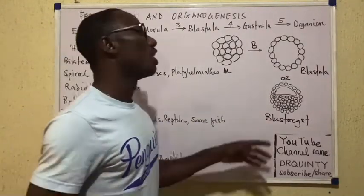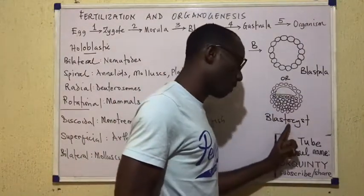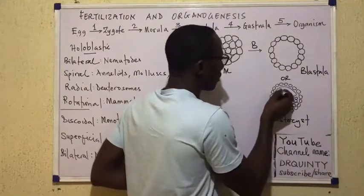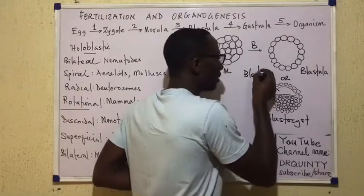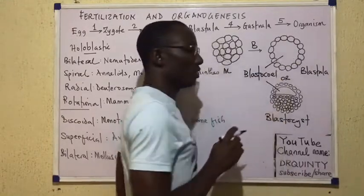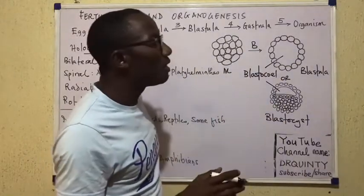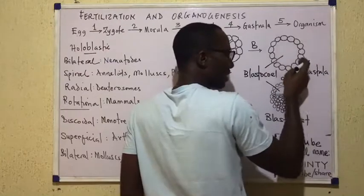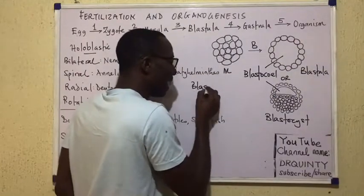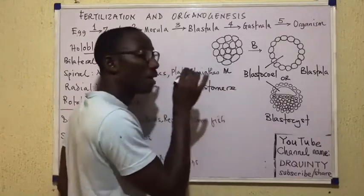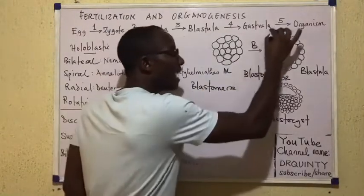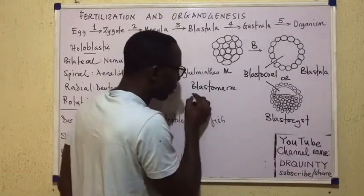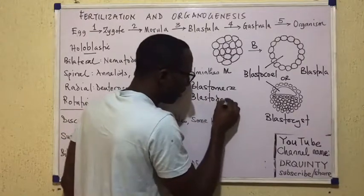Here is an important difference. In the case of both the blastula and the blastocyst, there is a cavity — that's a similarity — and that cavity is called the blastocoele. In the case of the blastula, the cells form a ring, each called a blastomere, and the whole mass of cells surrounding the cavity is called the blastoderm.